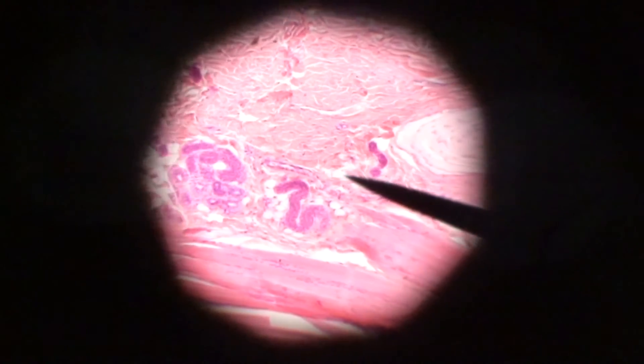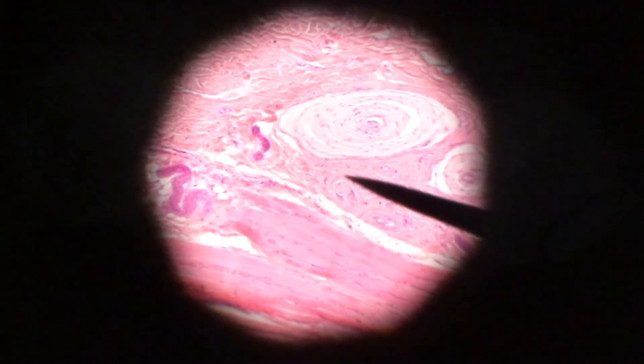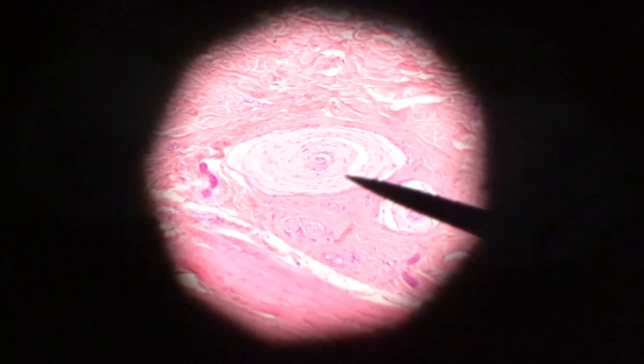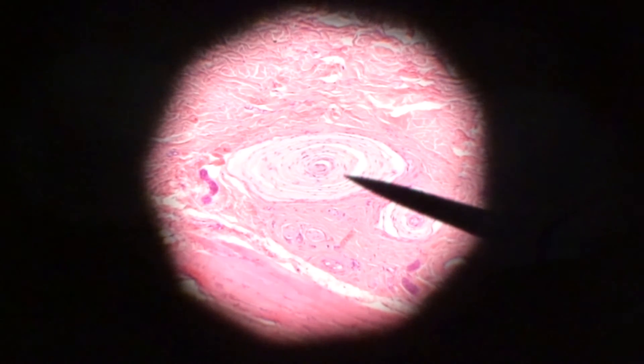All right, these are really easy to find because they look like an onion cut in half. Here's one right here so you can see the onion rings that are right there. This is your lamellar, also known as Pacinian corpuscle, deep for deep pressure.